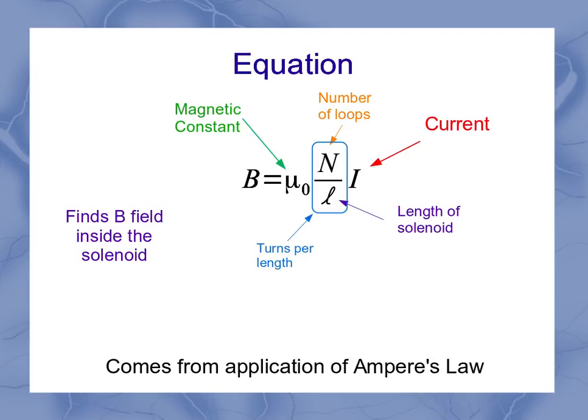Notice that nowhere in this equation does it refer to the radius of the solenoid. And it turns out it doesn't matter what the radius of the solenoid is. As long as you're inside a fairly ideal solenoid, the magnetic field is going to be given by this equation.